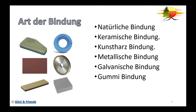Wir unterscheiden nun die verschiedenen Arten der Bindungen. Die natürliche Bindung kommt vor wie zum Beispiel im belgischen Brocken – da ist sie einfach so gewachsen und so verwendet man ihn auch. Die keramische Bindung wird in einem Brennofen gebrannt – durch das Herstellungsverfahren entstehen dann auch die Spanräume und die Festigkeit der Bindung. Brennt man bei ziemlich hoher Temperatur, ist die Bindung ziemlich hart; brennt man kürzer, wird sie weicher.